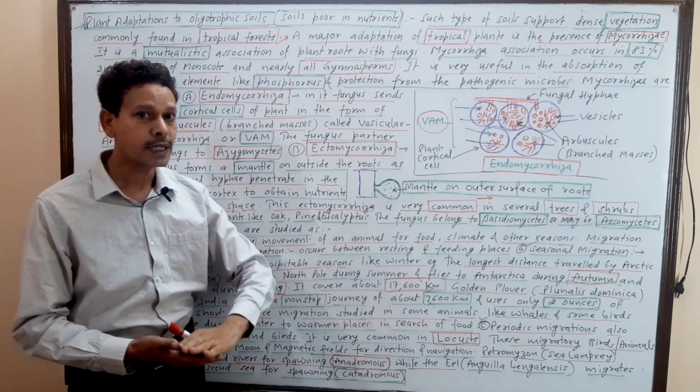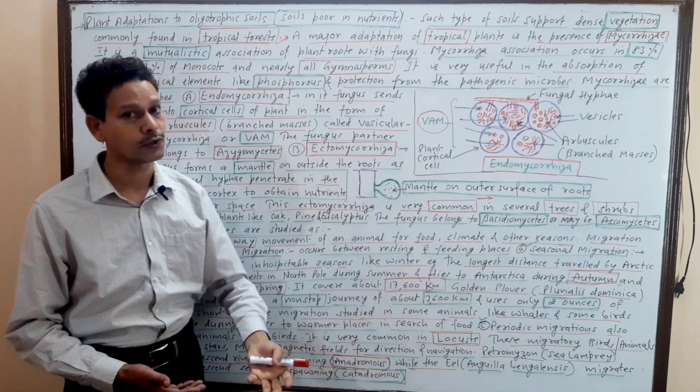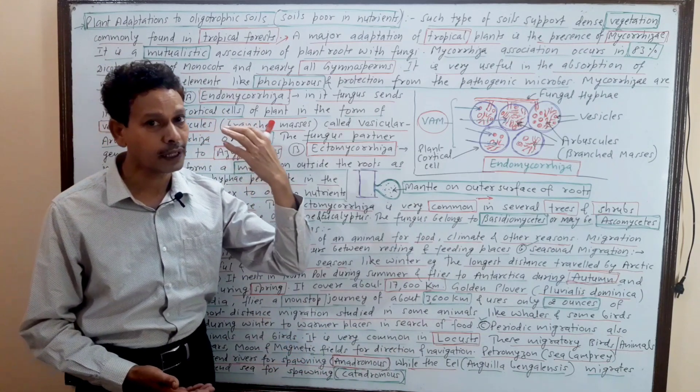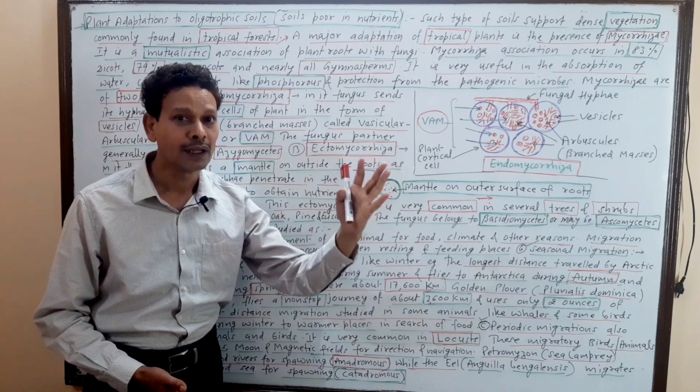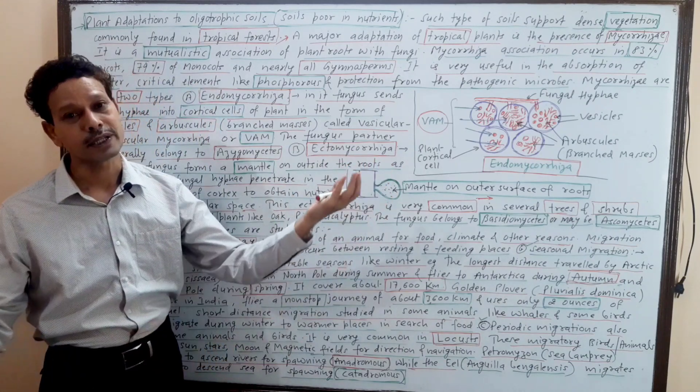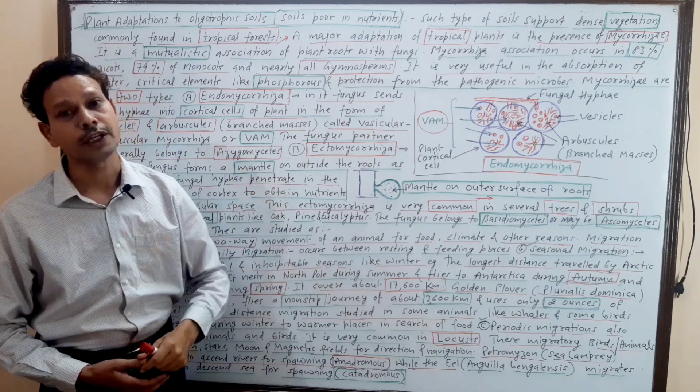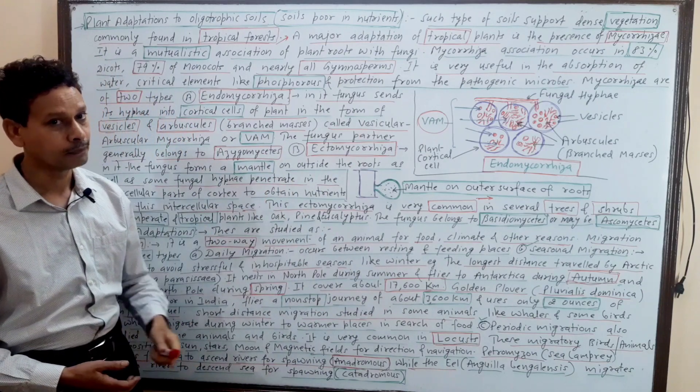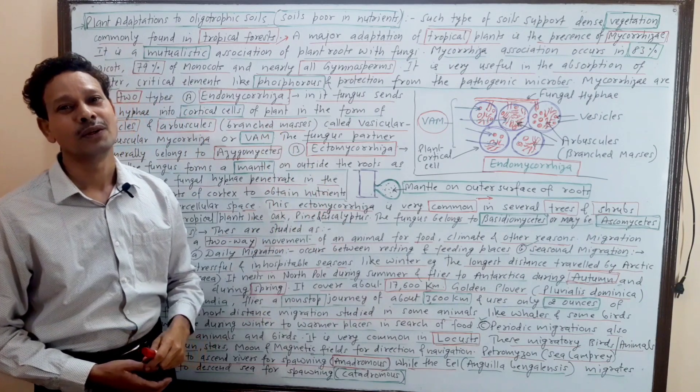This mycorrhizae - fungus and roots association - occurs in about 79% in monocots and 83% in dicots. Nearly about 80% of plants have this association, and in all gymnosperms the fungal hyphae associate with plant roots. This mycorrhizae has two types - very important.